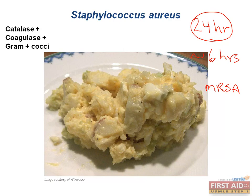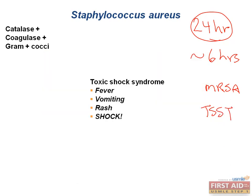Staph aureus can also cause toxic shock syndrome as a result of the toxic shock syndrome toxin, or TSST. This presents with fever, vomiting, rash, and shock. The mechanism is that it causes non-specific activation of T cells by causing non-specific interaction between the T cell receptor and MHC class II molecules, leading to a massive release of vasoactive chemokines. The classic history is retained tampons or nasal packing — don't miss it.